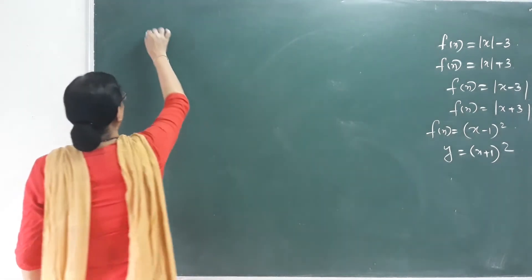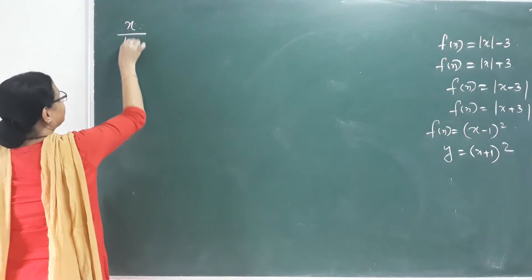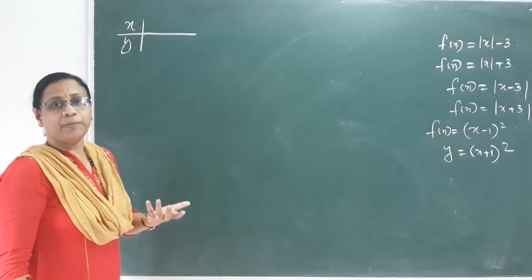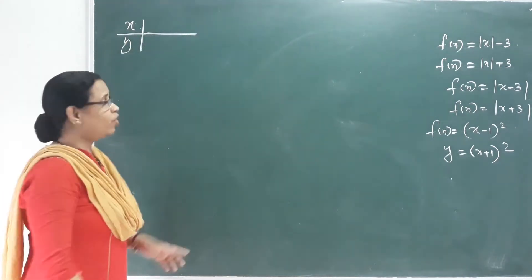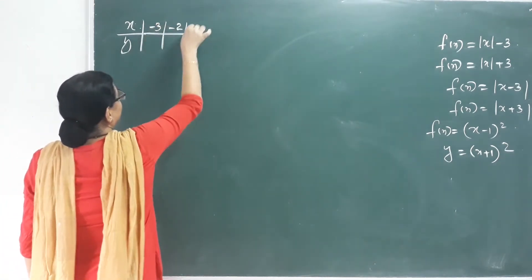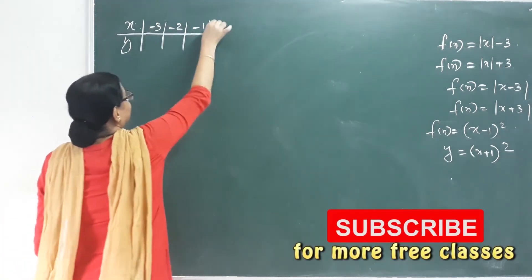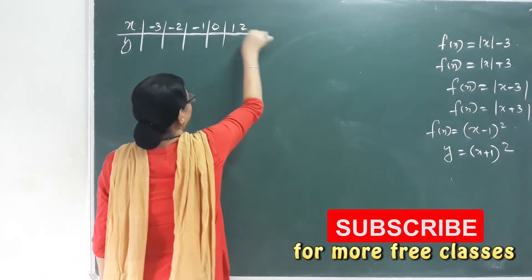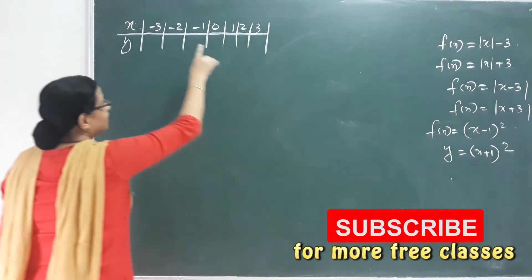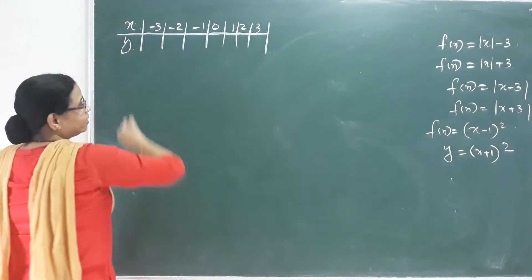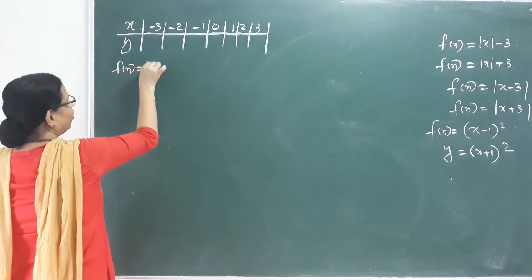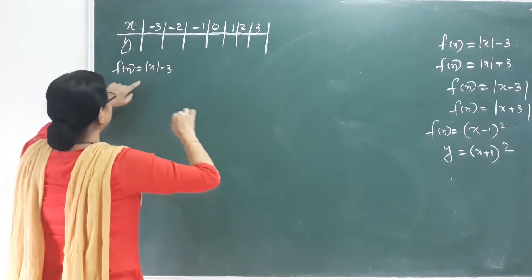I have x here. We call x any real number. Then I have negative 3, negative 2, negative 1, 0, 1, 2, 3. I'm going to write y. This is f of x, that is equal to mod x minus 3. This is our function.